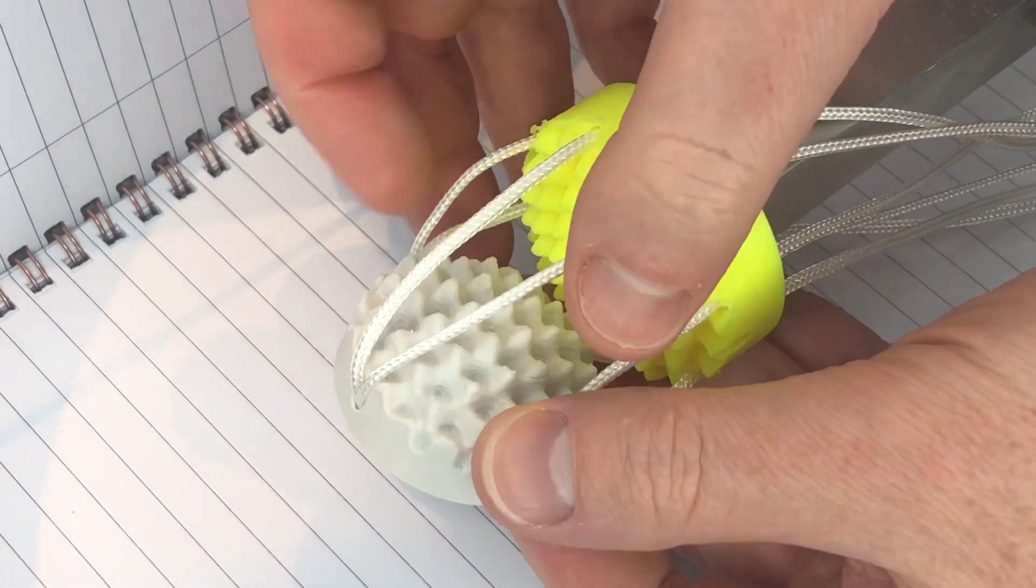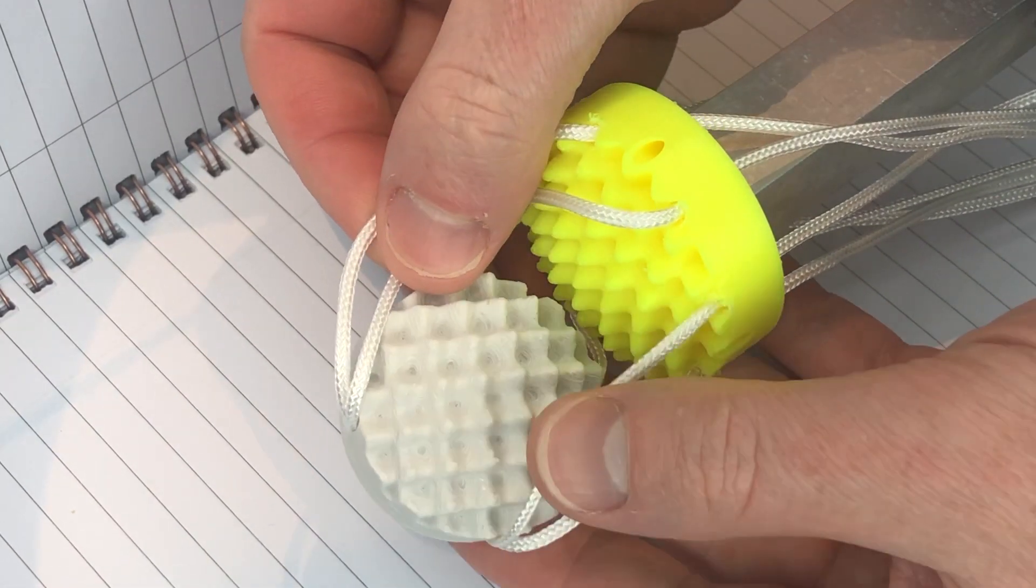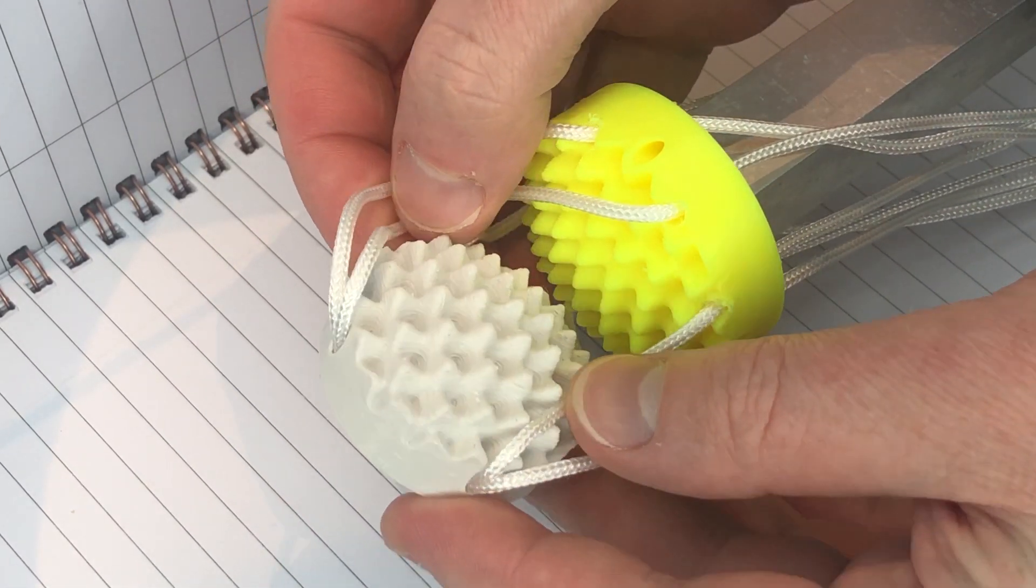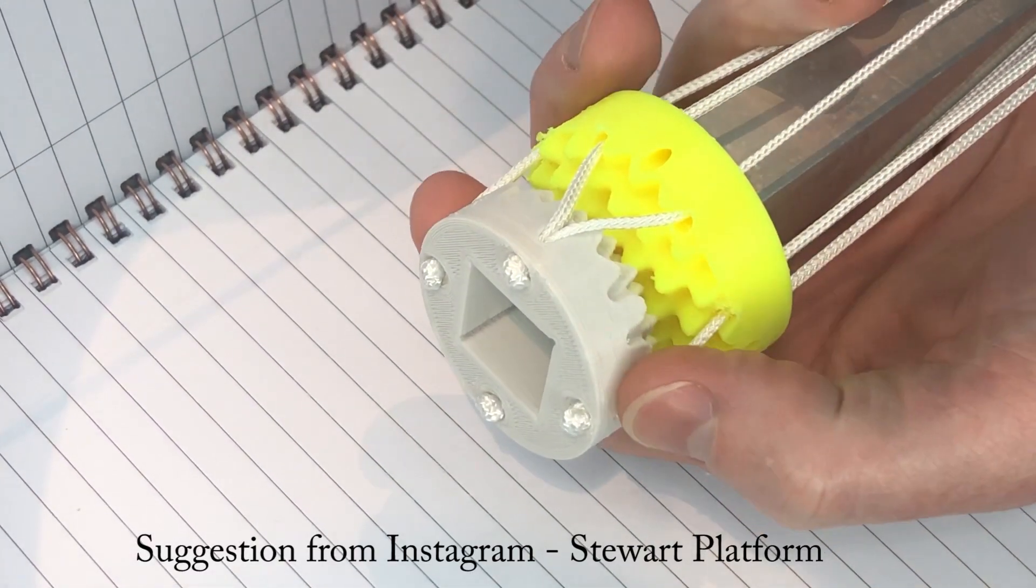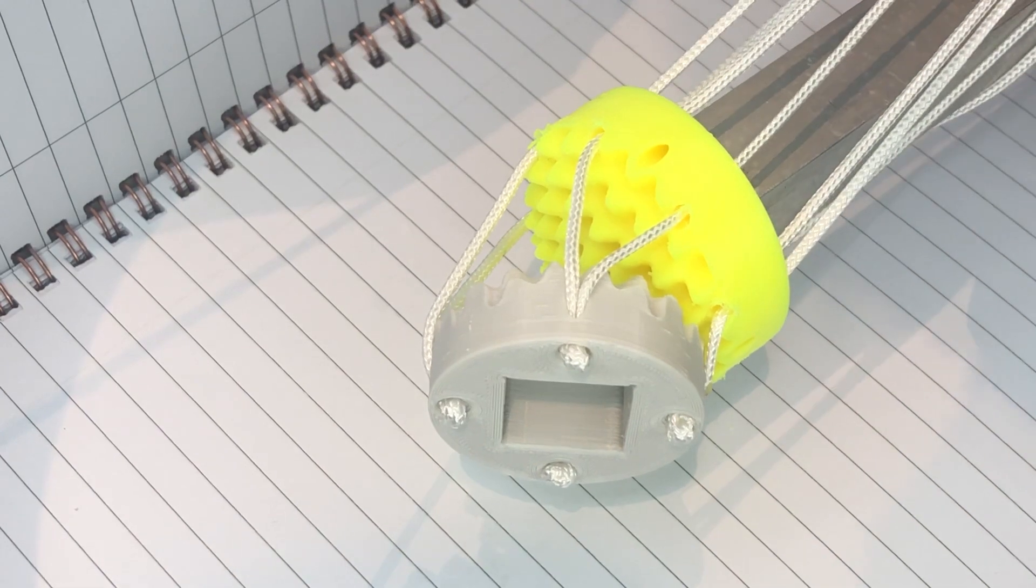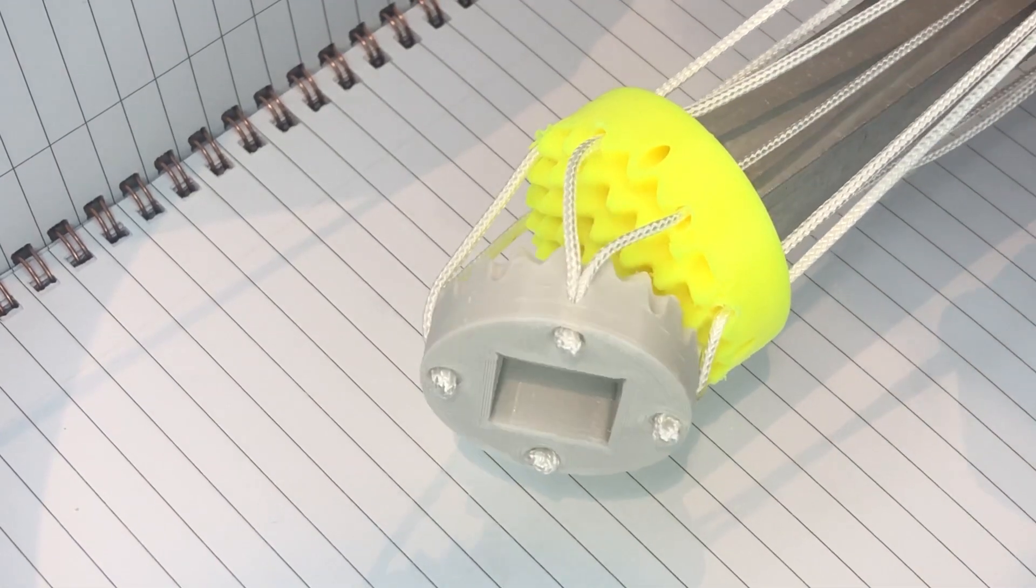A Stuart platform type string arrangement was tested to reduce the Z axis wiggle. It worked ok. Suggestions for improvements are welcome. As always, this project is open source and the CAD will be up on Thingiverse.